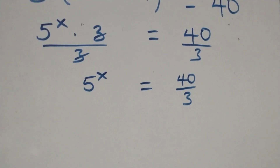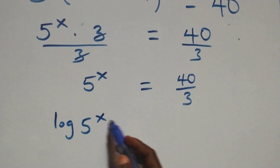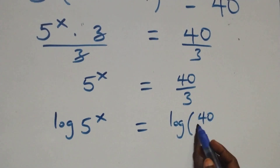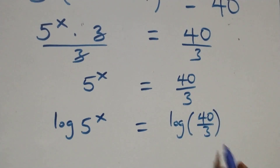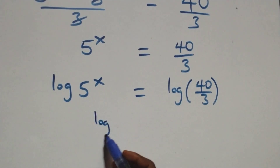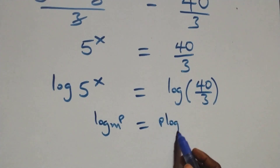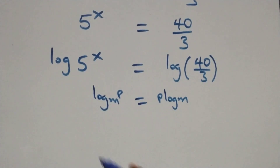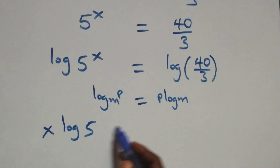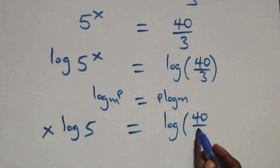The next step: we take the log on both sides. We have log of 5 raised to power x equals log of 40 over 3. We apply the power log rule: log n raised to power p is the same as p log n. So we get x log 5 equals log(40/3).